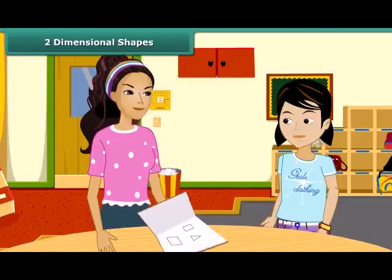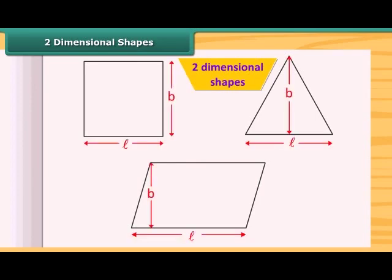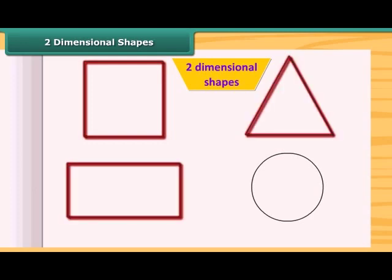Look at these shapes. These are all two-dimensional shapes. They have only two measurements: length and breadth. All the shapes that we draw in our notebook are two-dimensional. All those shapes that we can draw on paper and which have only two measurements are two-dimensional shapes. A square, rectangle, triangle, circle, etc. are examples of two-dimensional shapes.